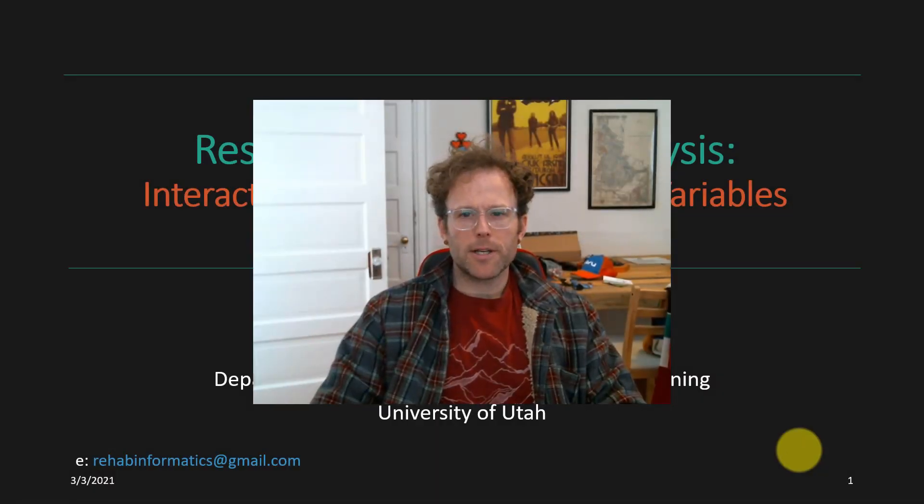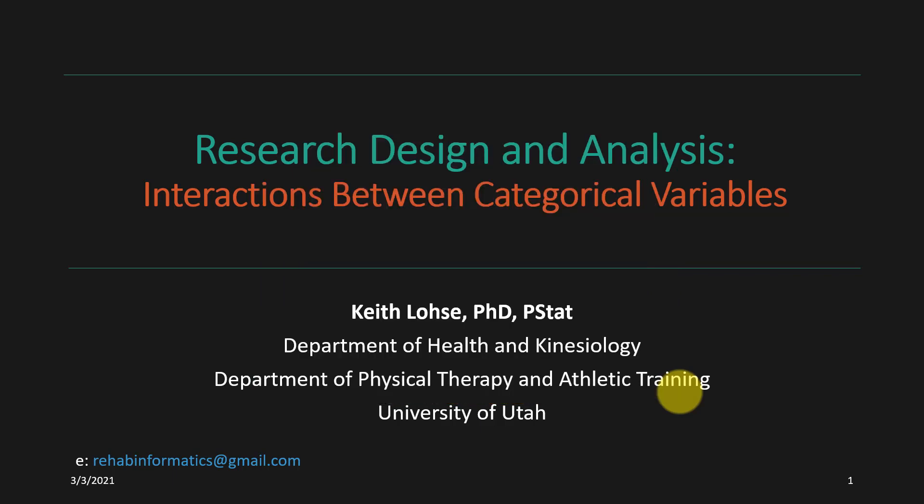Hi everyone, welcome to our third video in our series on multi-wave factorial ANOVA. In today's video we're going to be building off of the previous two, but we're really focusing on the difference between interactions and main effects and making sure that you have a good understanding of conceptually what those two things are, rather than mathematically how they're computed and how we get the omnibus F statistic to actually conduct the inferential test.